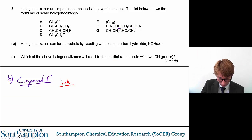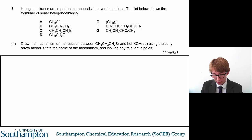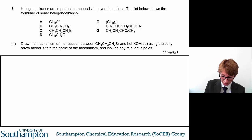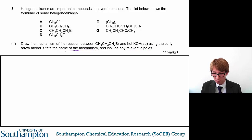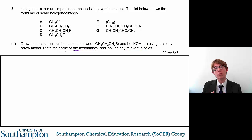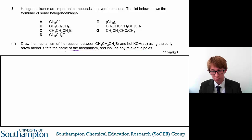Moving on to the next question: you need to draw the mechanism of the reaction between CH3CH2CH2Br, or 1-bromopropane, and hot potassium hydroxide using the curly arrow model. You need to state the name of the mechanism and include any relevant dipoles. Even if a question doesn't ask you to include the relevant dipoles, it is always a good idea to put dipoles on the molecule, because it means you can see where the molecule might react.